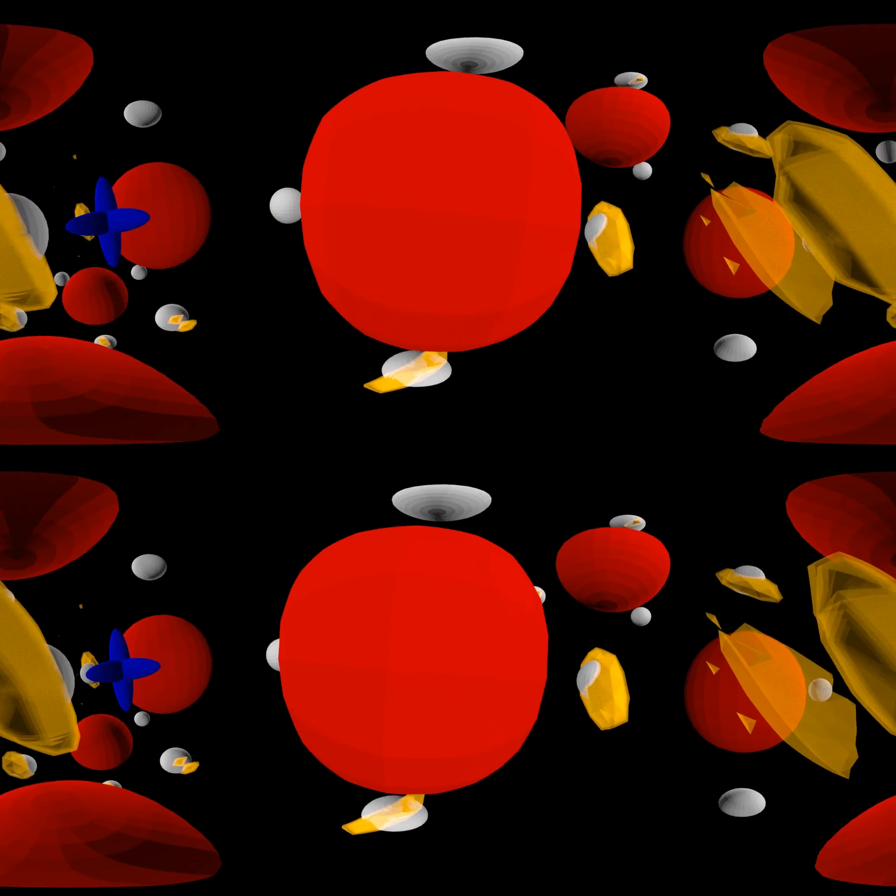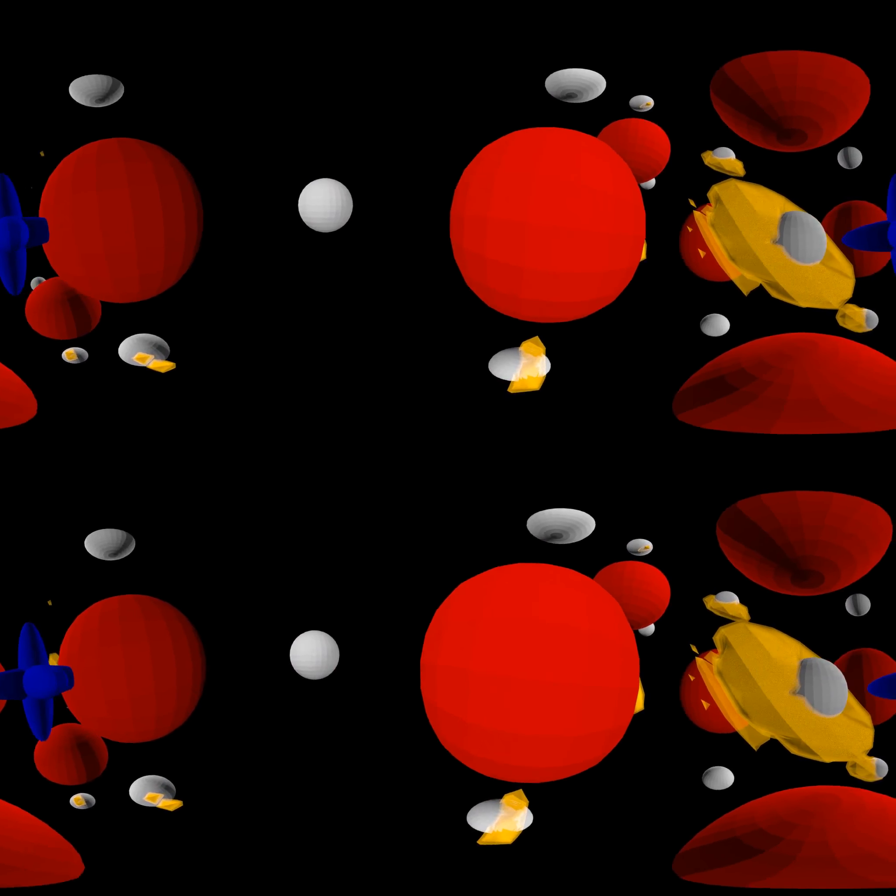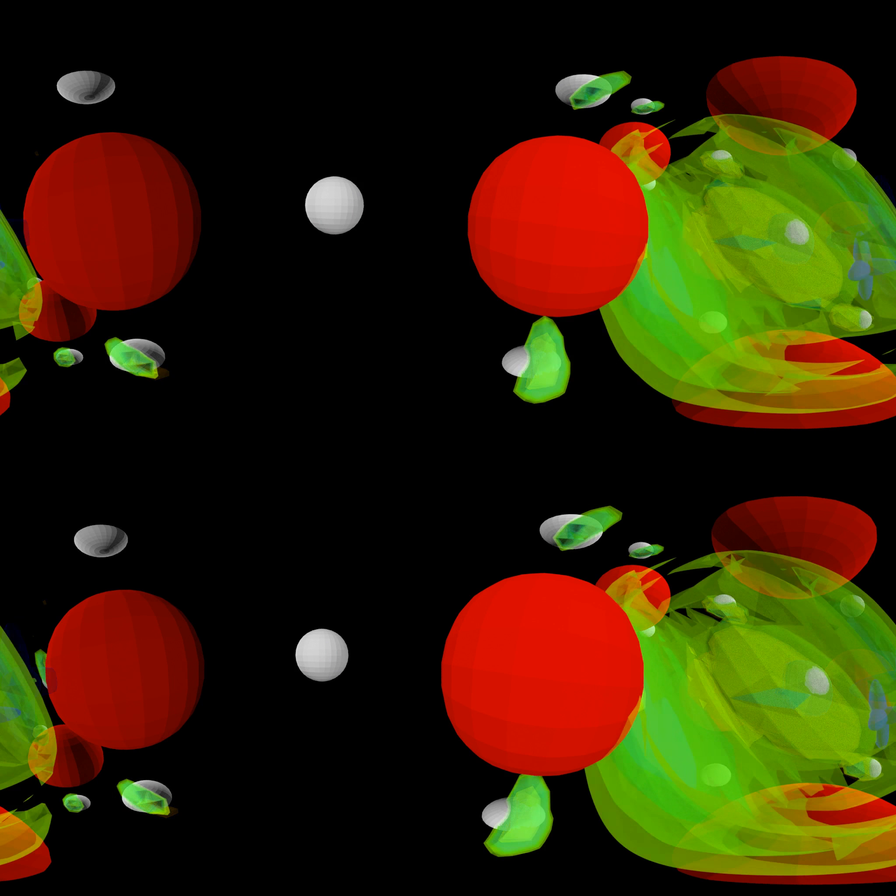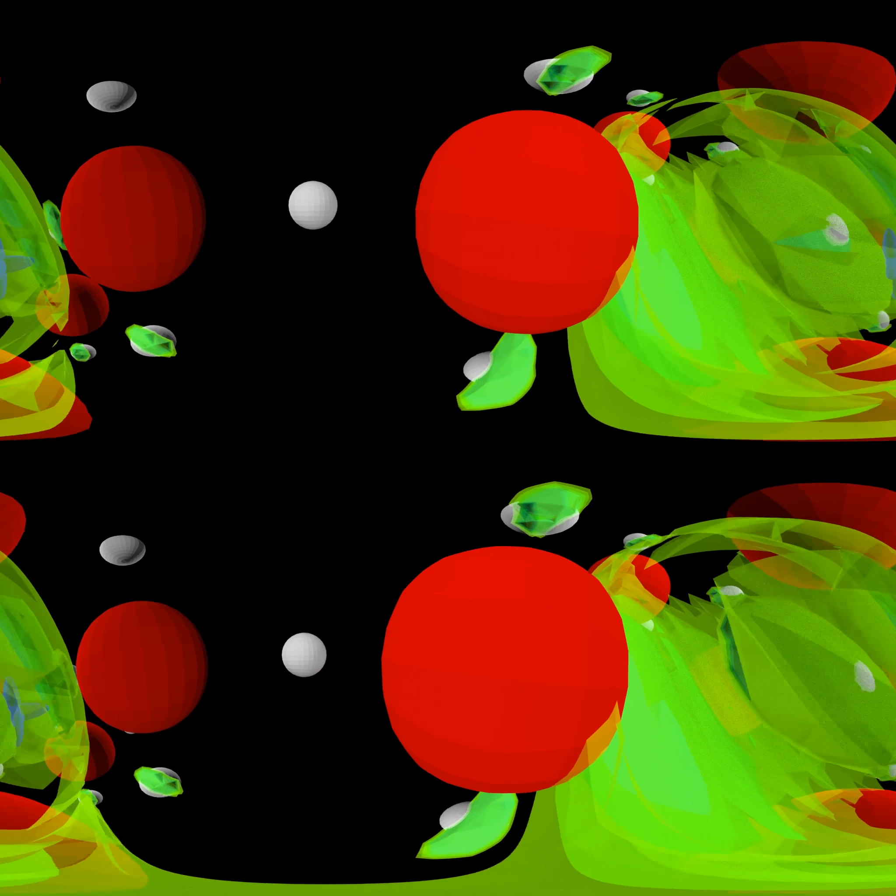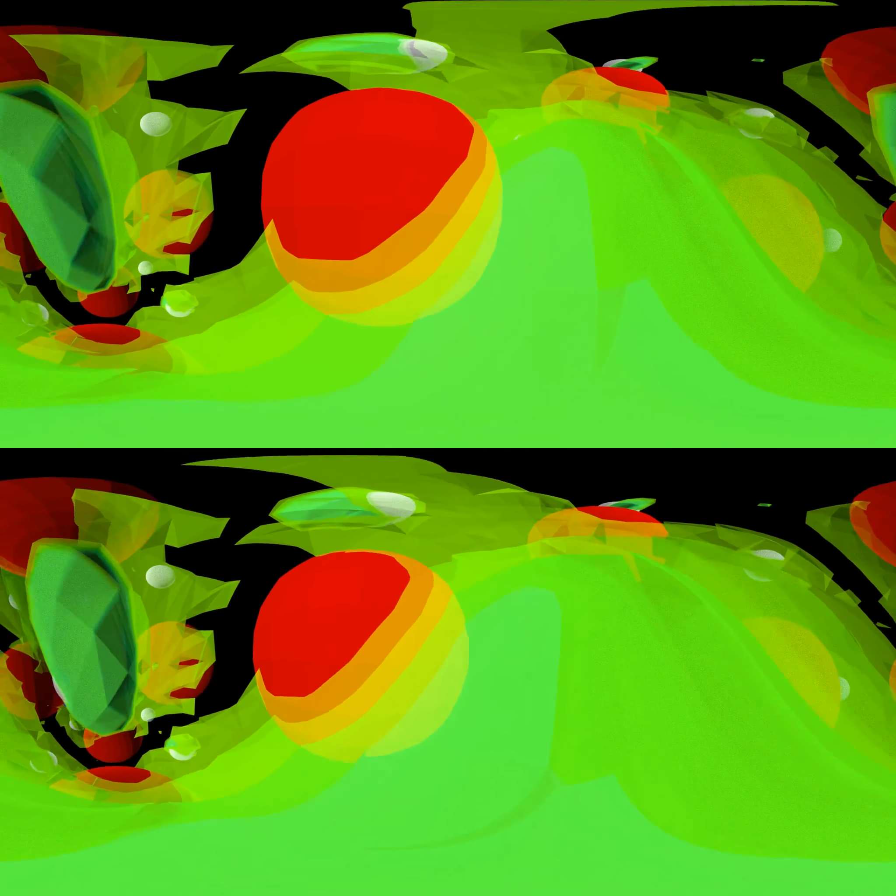What you can see for this simple crystal happens in any solar cell material or light emitting device. Whether a material can be used for one or the other application, however, strongly depends on this interplay of electron and hole.